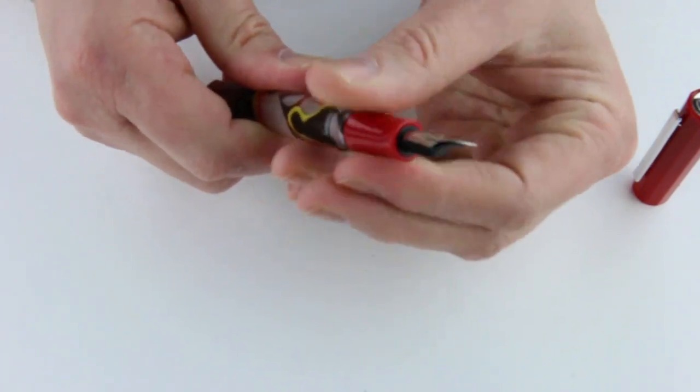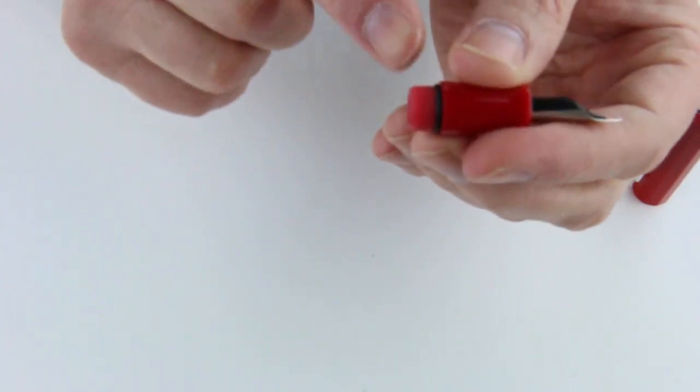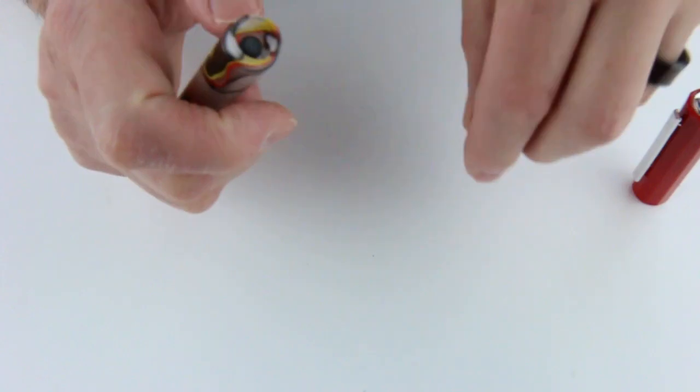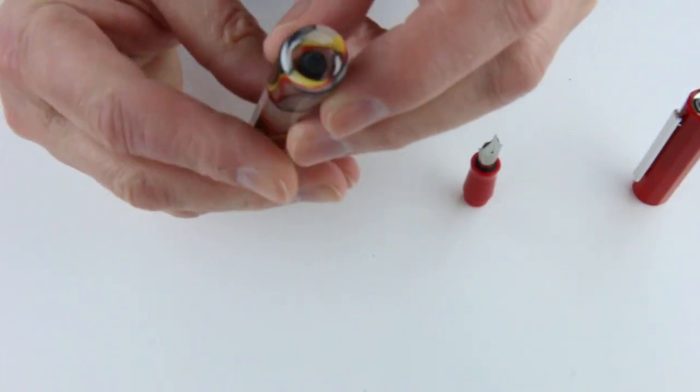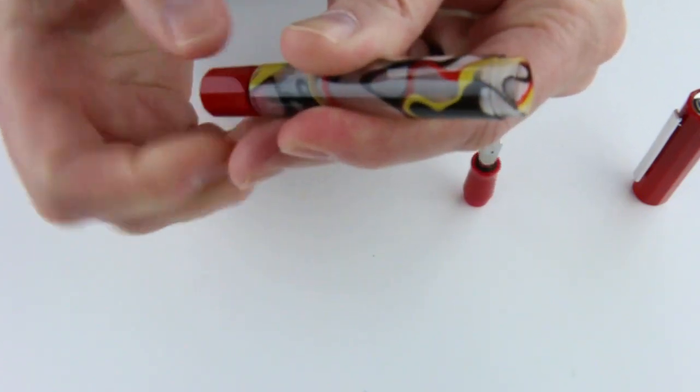Since it's an eyedropper pen, this front section will unscrew from the body of the pen. There is an o-ring here to keep it from leaking, and then it has a piston inside you control by the knob here on the end of the barrel, so you would unscrew that.